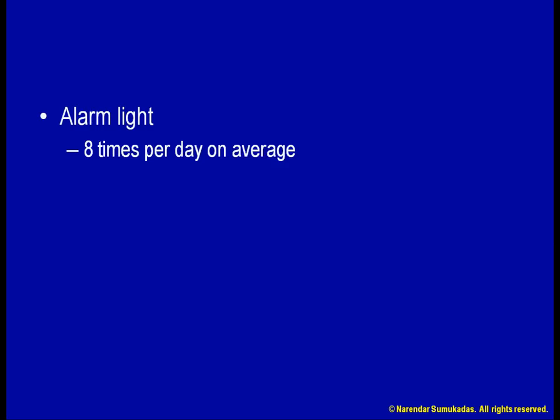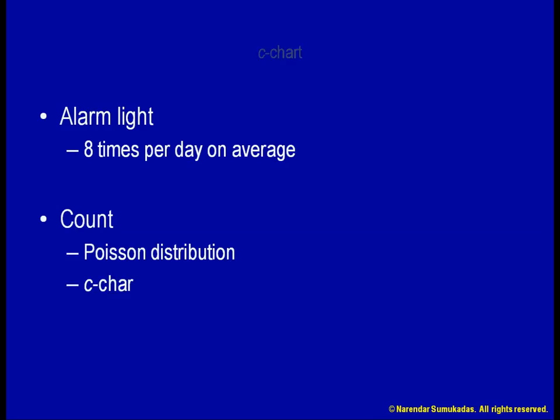But suppose I know that the light went on 12 times today. Do I know how many times it did not go on? I have no idea how many times the light tried to go on but didn't. So I have a count, but not a proportion. This kind of data follows a Poisson distribution, and the appropriate chart to plot is a C-chart.